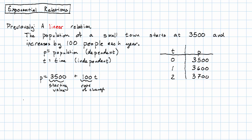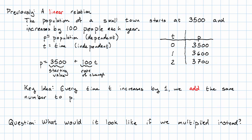The key idea here is that every time t increases by 1, we add the same number to p. So the question that raises is, what would it look like if, instead of adding over and over again, we multiplied over and over again? Let's see an example of what that looks like.